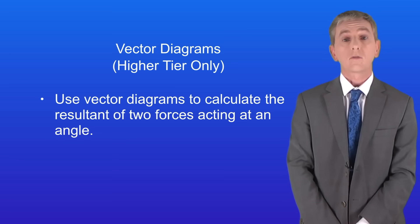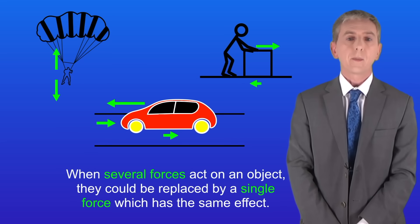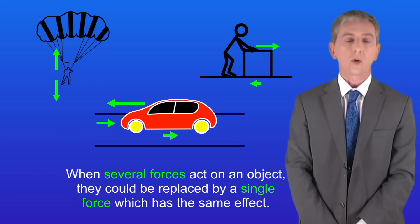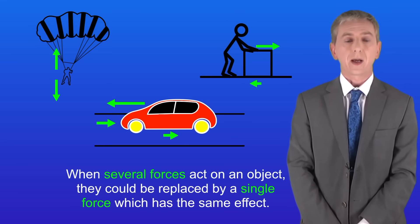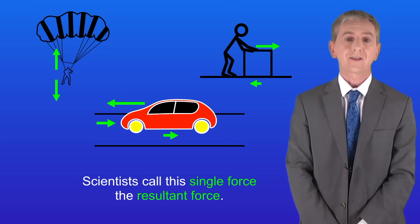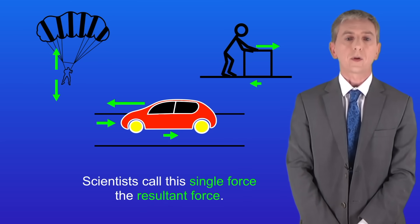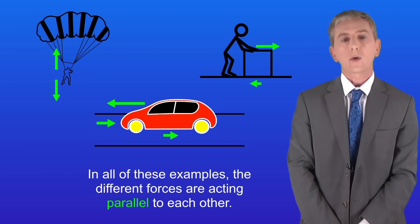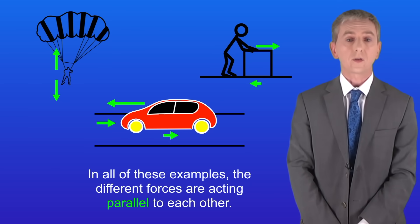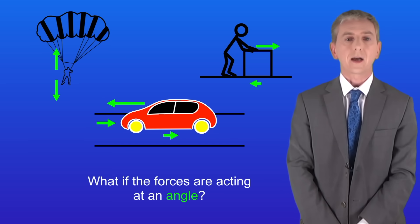In the last video we started looking at resultant forces. Remember that when several forces act on an object they could be replaced by a single force which has the same effect, and scientists call this single force the resultant force. We saw several examples where we calculated the resultant force. Now in all of these examples the different forces are acting parallel to each other, but what if the forces are acting at an angle?